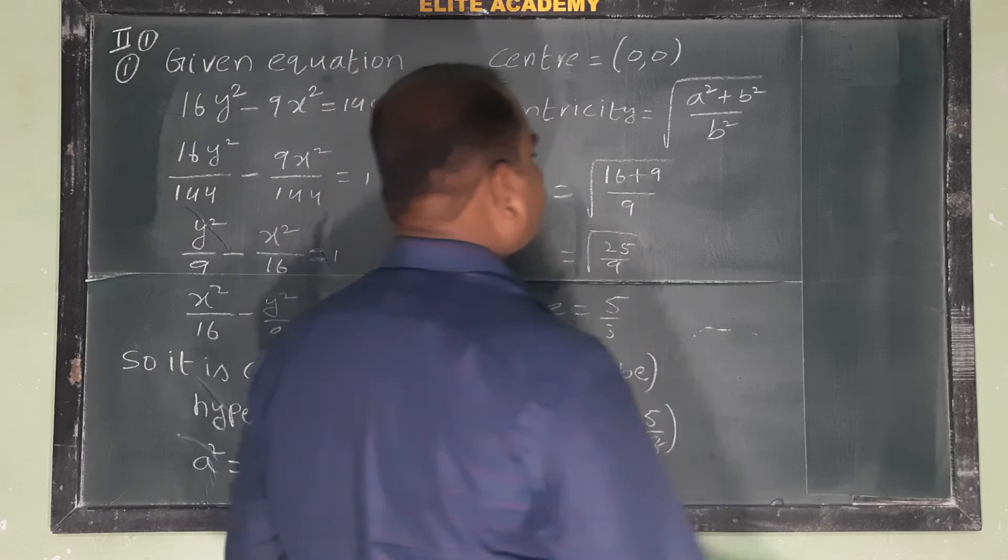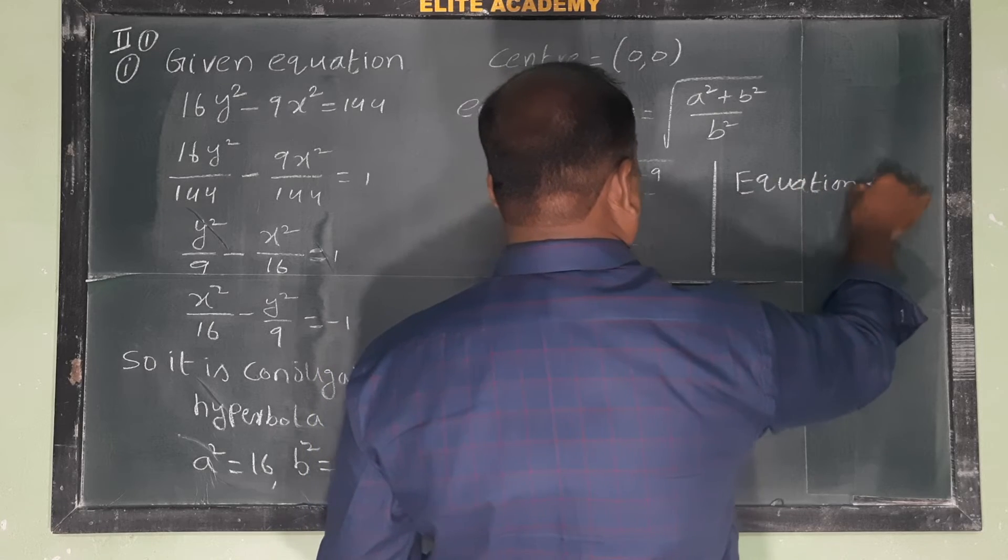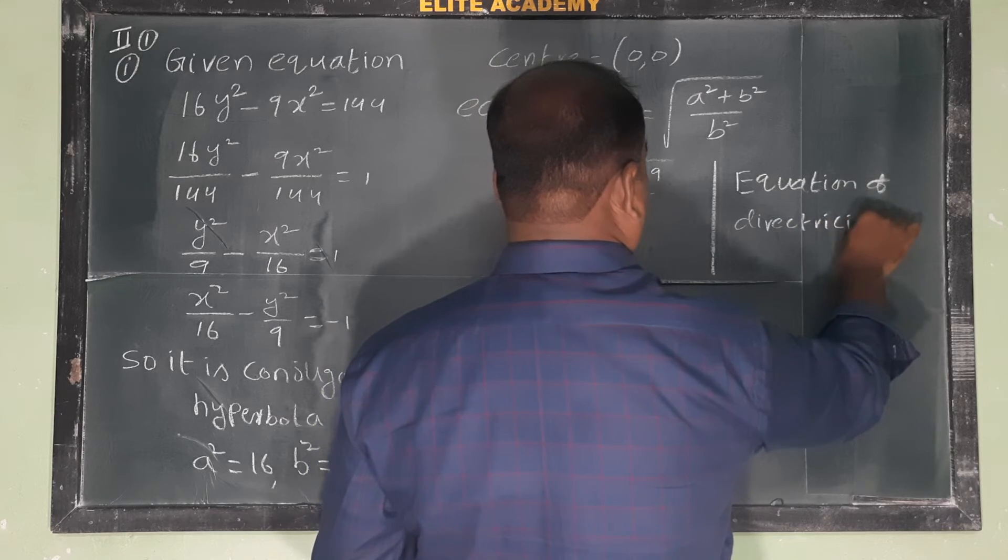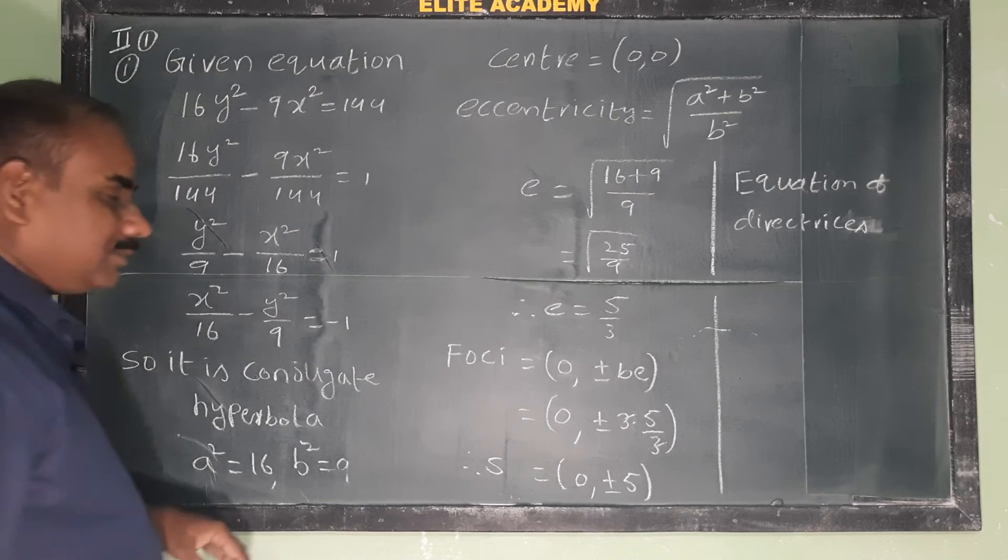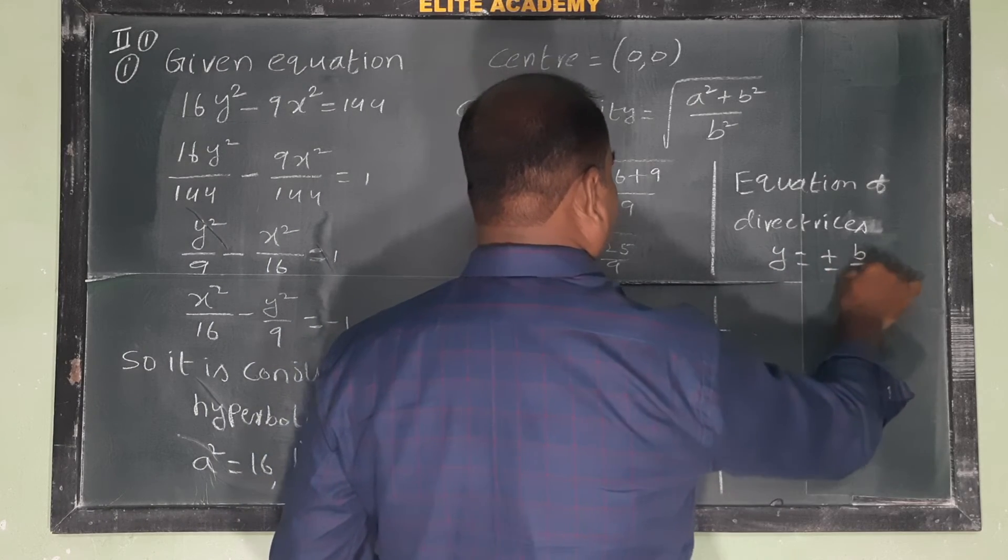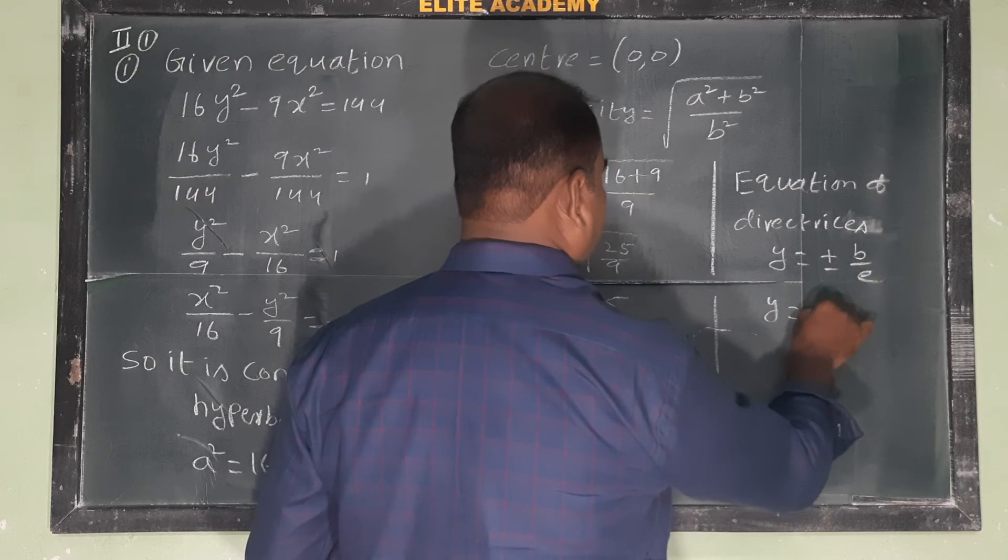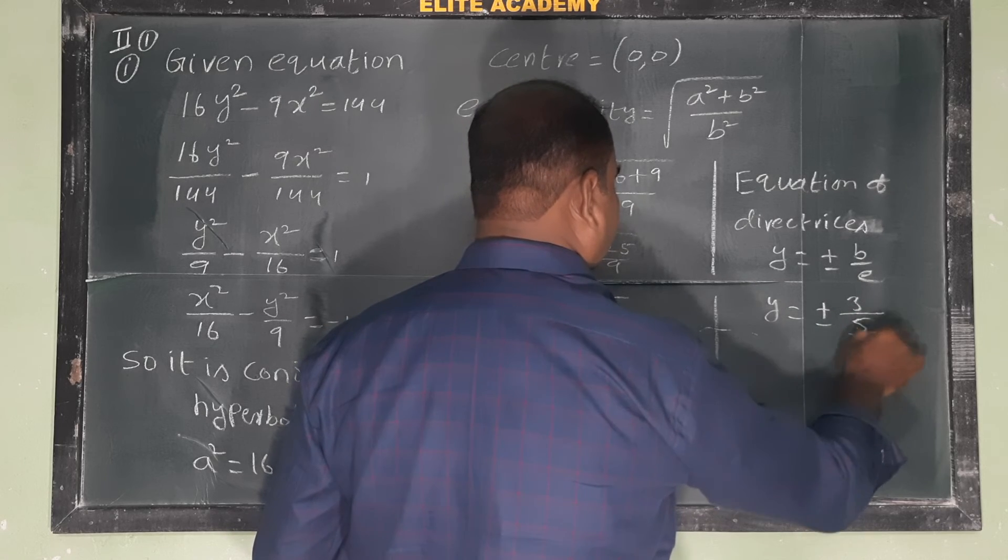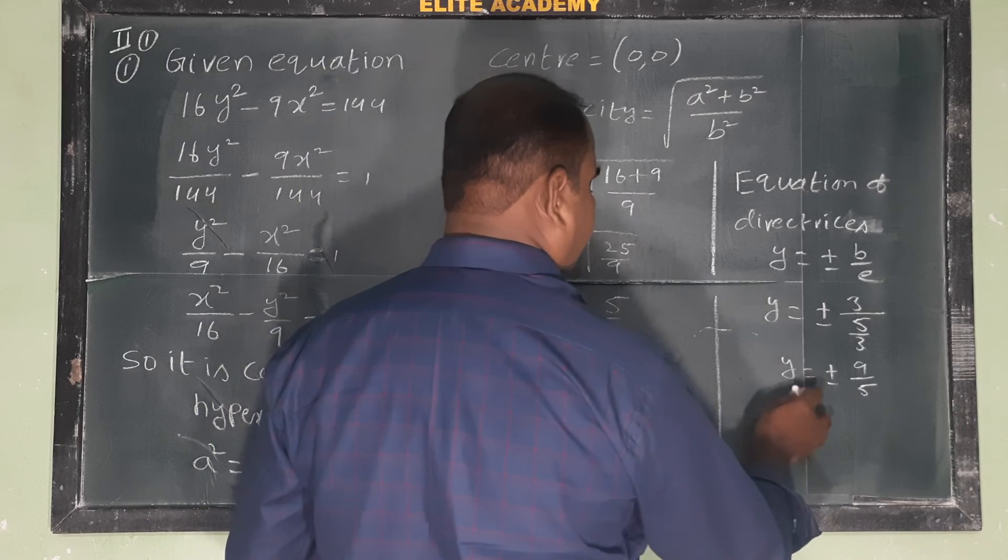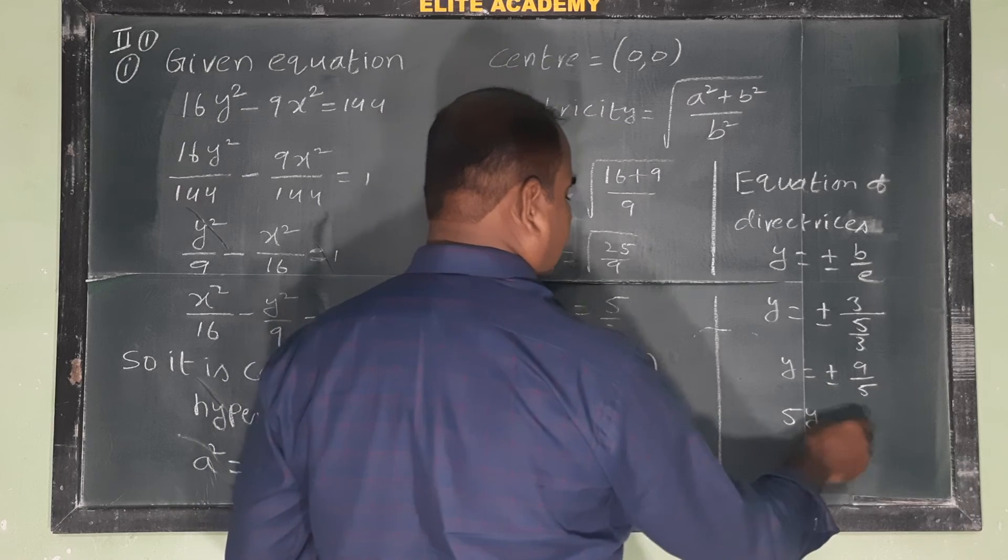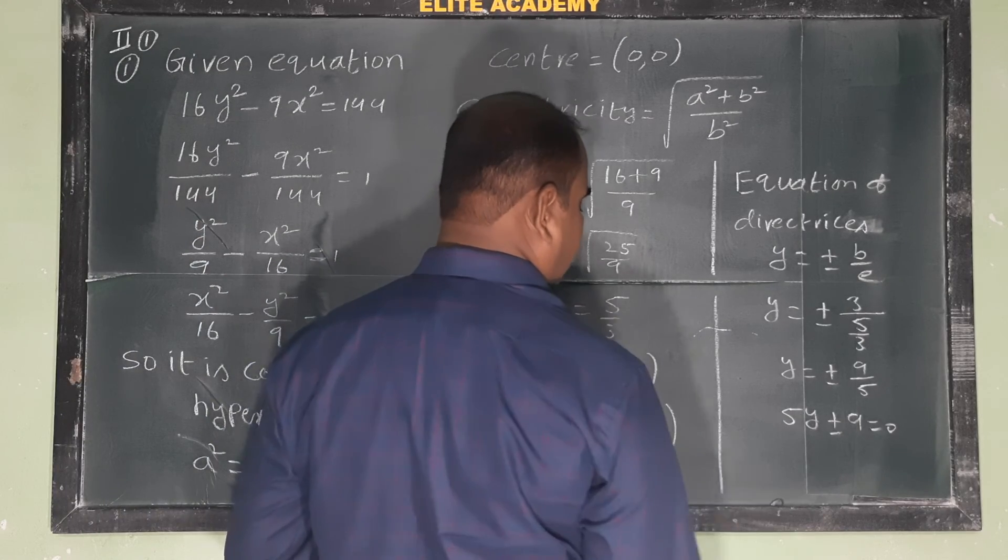Equation of directrices: y = ±b/E. So y = ±3/(5/3) = ±9/5. Cross multiplying: 5y = ±9, or 5y ± 9 = 0. These are the equations of directrices.